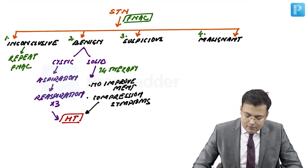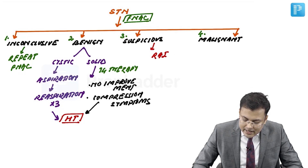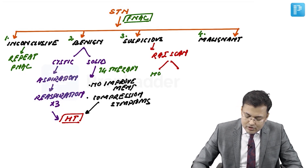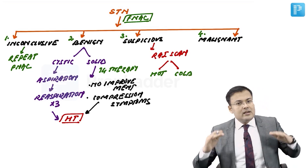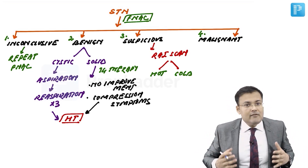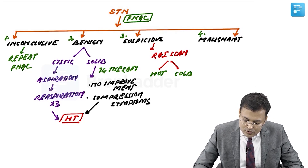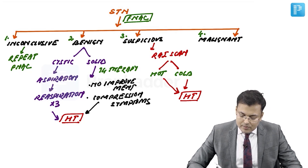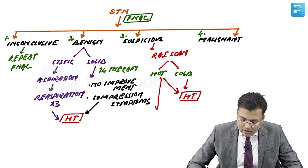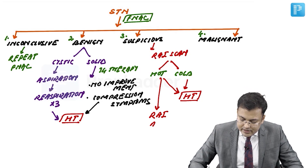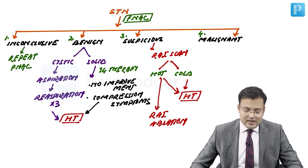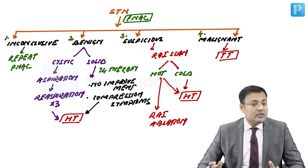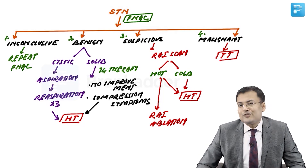For suspicious lesions, we perform a radioactive iodine scan. If the nodule is cold (decreased radioactive iodine uptake), we go for hemithyroidectomy. If the nodule is hot, we can choose either hemithyroidectomy or radioactive iodine ablation. In cases of thyroid malignancy, the treatment is total thyroidectomy.